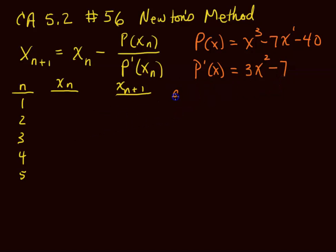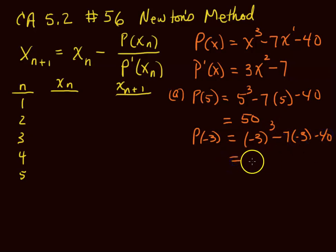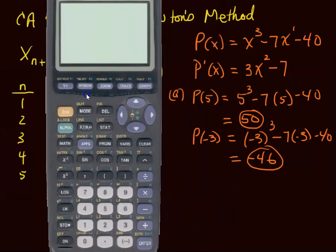Now they had us first of all find some of these things. P(5) equals 5³ minus 7 times 5 minus 40, which equals 50. P(-3) equals (-3)³ minus 7 times (-3) minus 40, and you get -46. Now how do you get those easily? Well we're going to use our calculator.